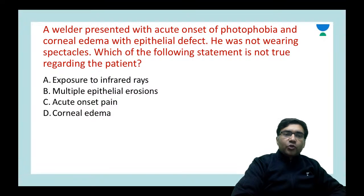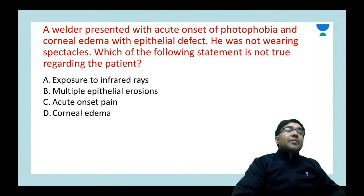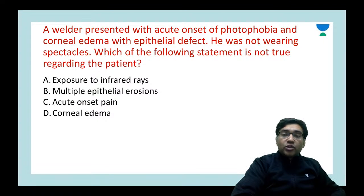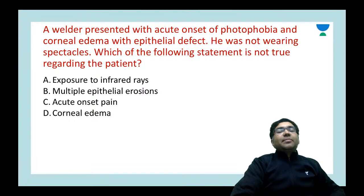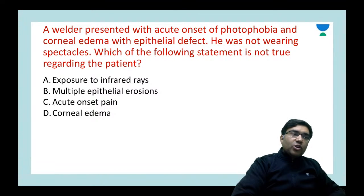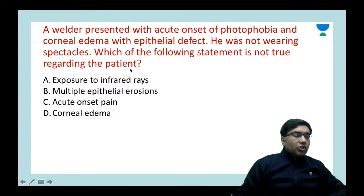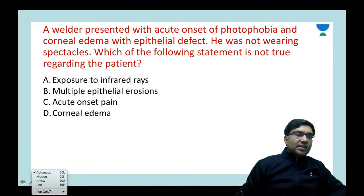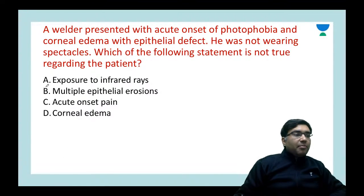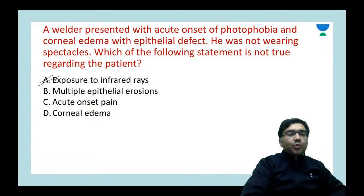A welder presented with acute onset photophobia and corneal edema with epithelial defect — he was not wearing protective spectacles. Which statement is not true? Options: exposure to infrared rays, multiple epithelial erosions, acute onset pain, or corneal edema. The answer is A — it is not infrared rays, it is UV rays that are important in this condition. This condition is called photokeratitis, also known as welder's arc or snow blindness. UV rays cause multiple epithelial erosions in the cornea and the patient has a lot of pain and possible corneal edema.